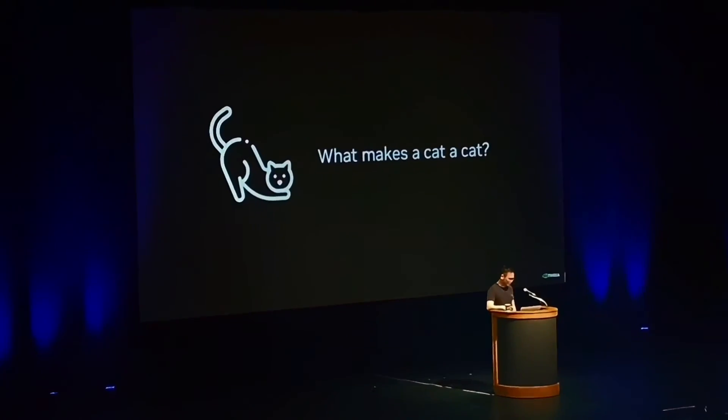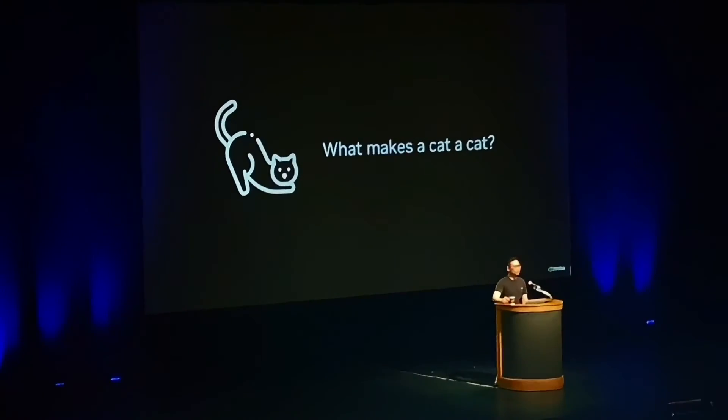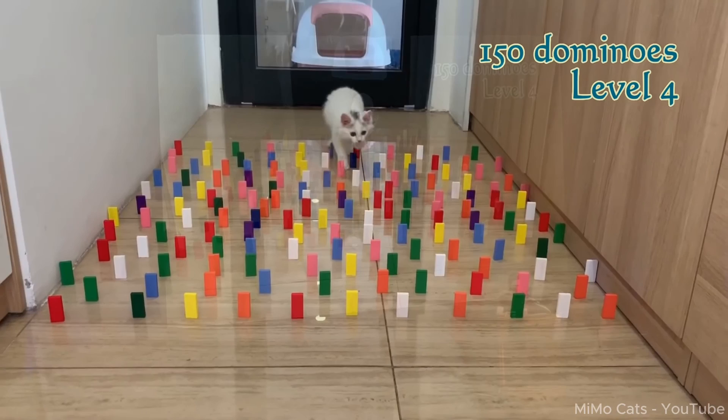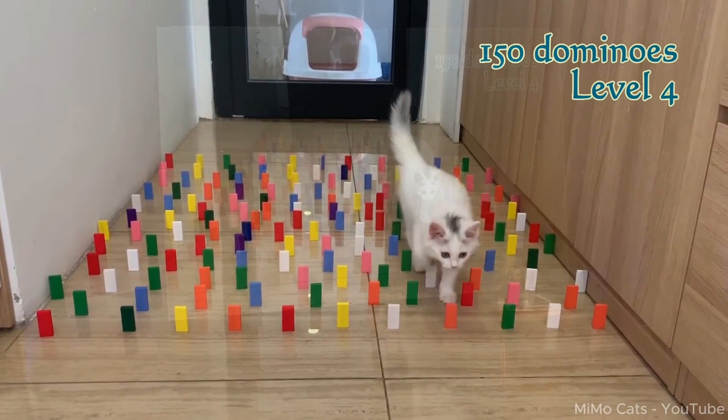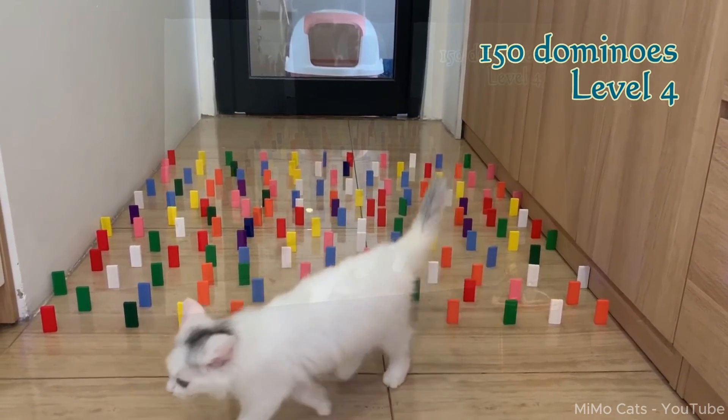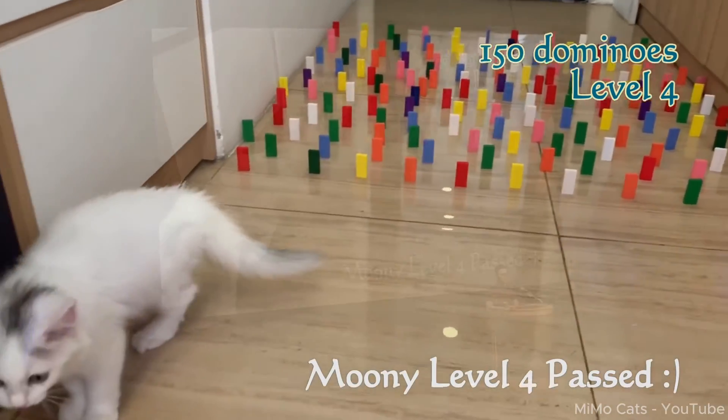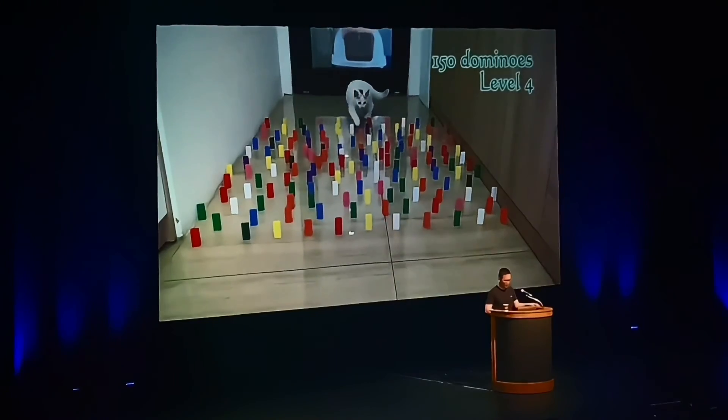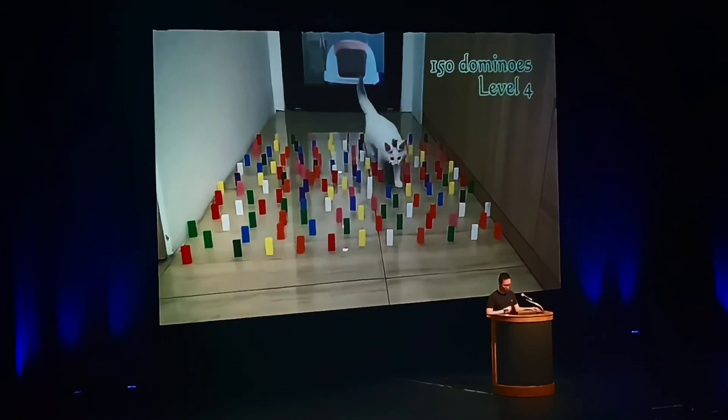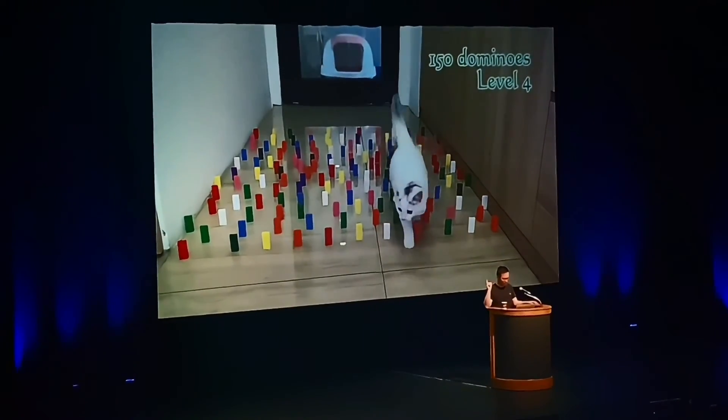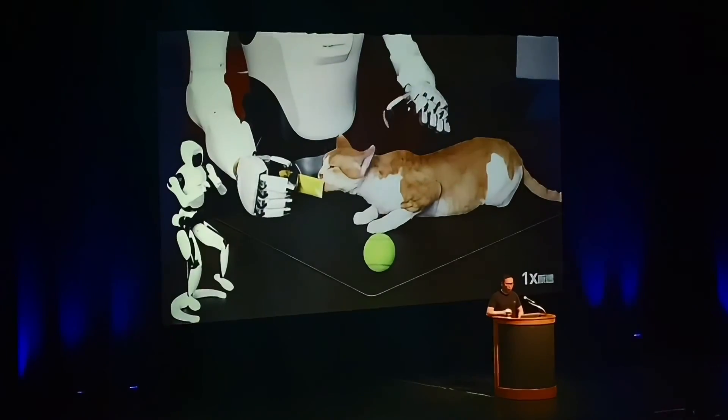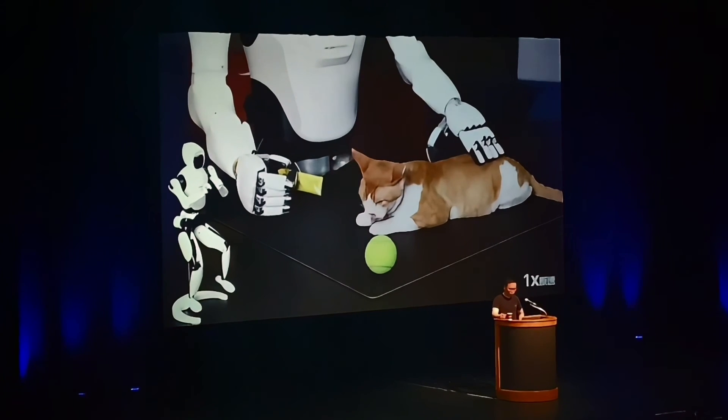So back to this question, what makes a cat a cat? The most profound question ever. Well, we don't have any robots that even approach cats in their agility, right? Cats are these embodied agents that are phenomenal in their sensory motor loop. They're so reactive and even faster than humans. So can we have robots someday to be as good as cats? Or even better, can we have humanoid robots pet the cat for you?